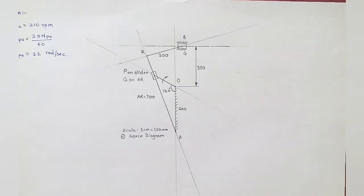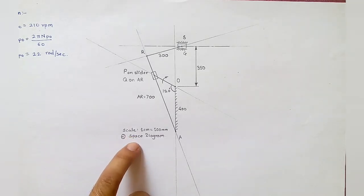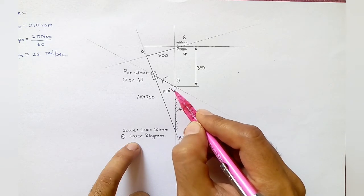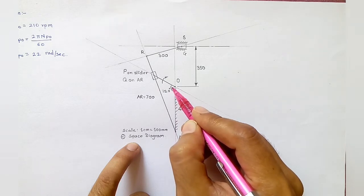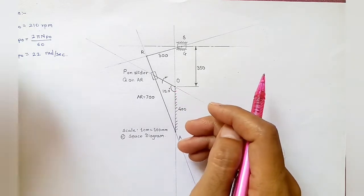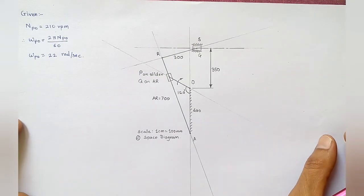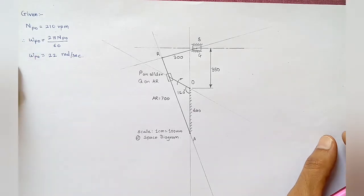The first step is to draw the space diagram. I have taken a scale of 1 cm = 100 mm. You need to focus on the angle of inclination of the crank — it is given with respect to vertical. The angle of 120 degrees is from vertical, so be careful while drawing it. The angular velocity of the crank is given as 22 radian per second, calculated from the RPM value.